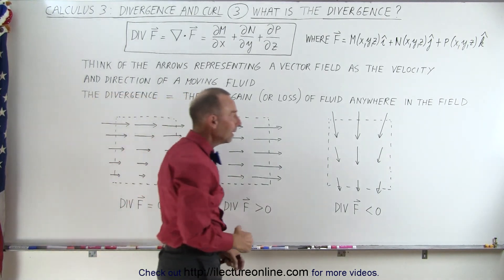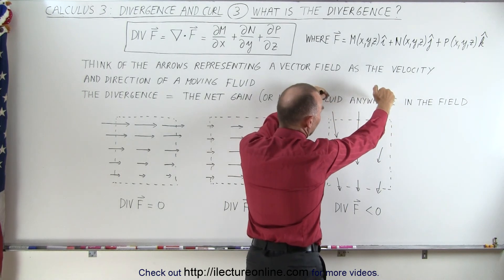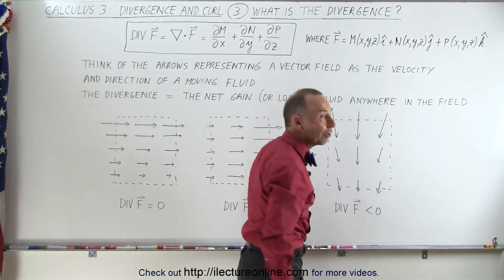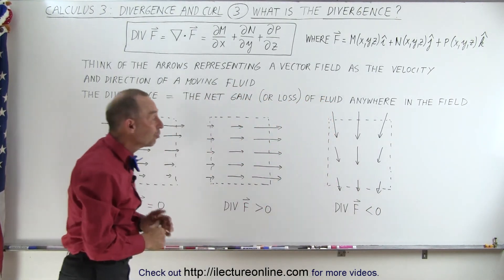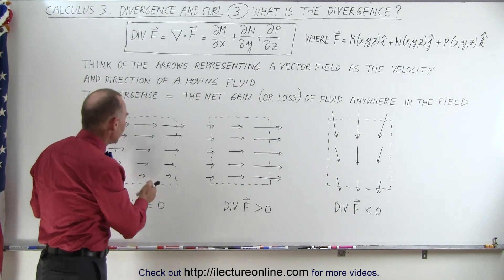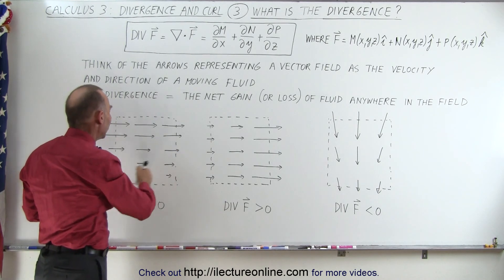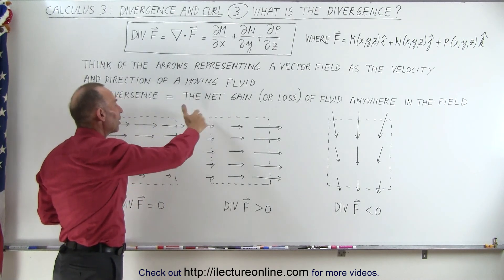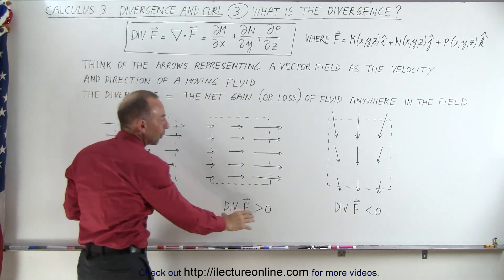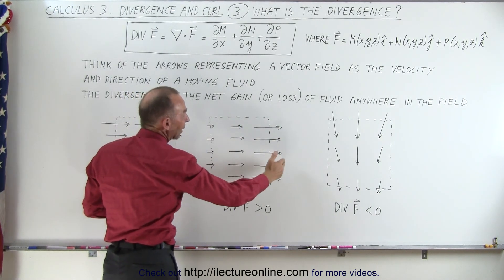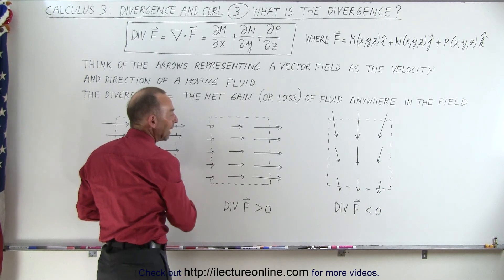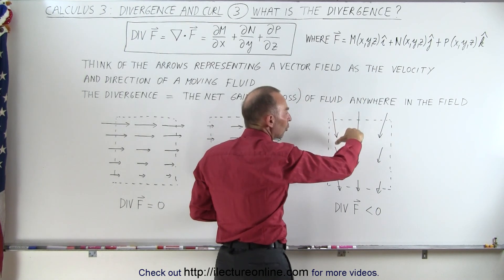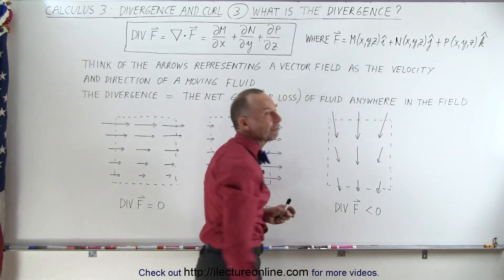Or, if we have more going in — if the vector field is stronger in the direction into the box than coming out — then the divergence of that vector field will be less than zero. If the divergence is greater than zero, the field becomes stronger in the direction of the arrows. If the divergence is less than zero, then the magnitude or strength of the vector field becomes smaller as you move in the direction of the vector field.